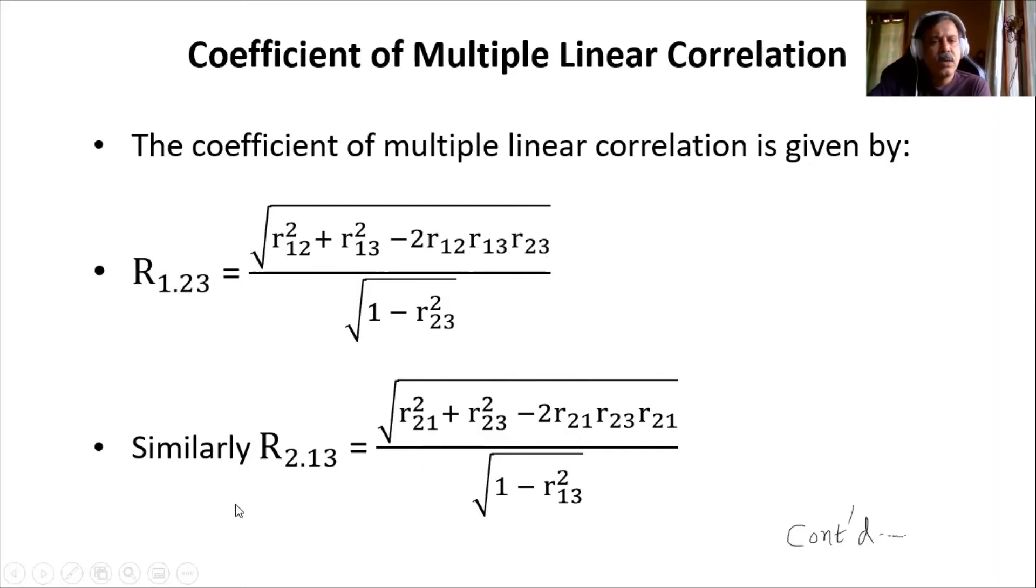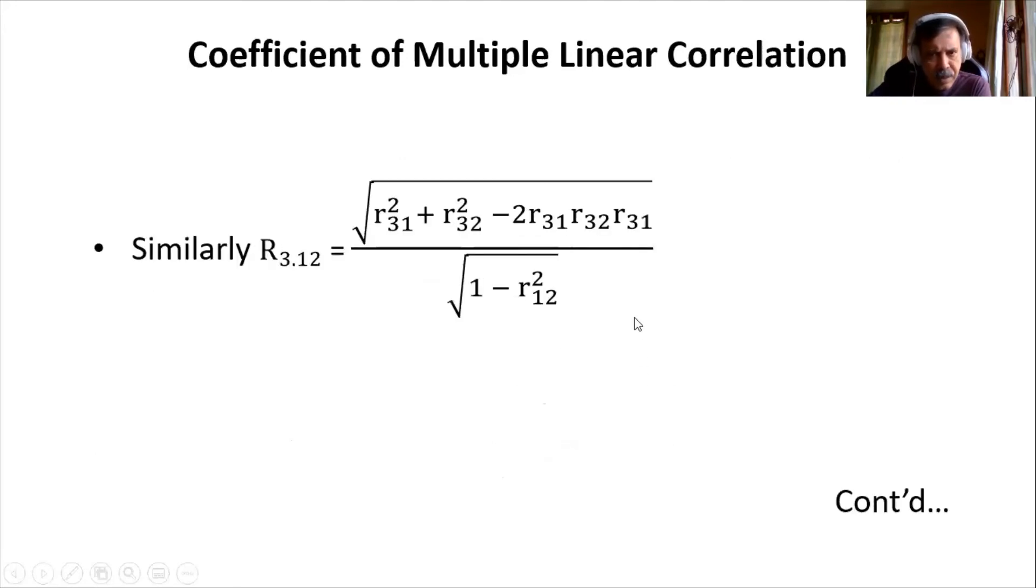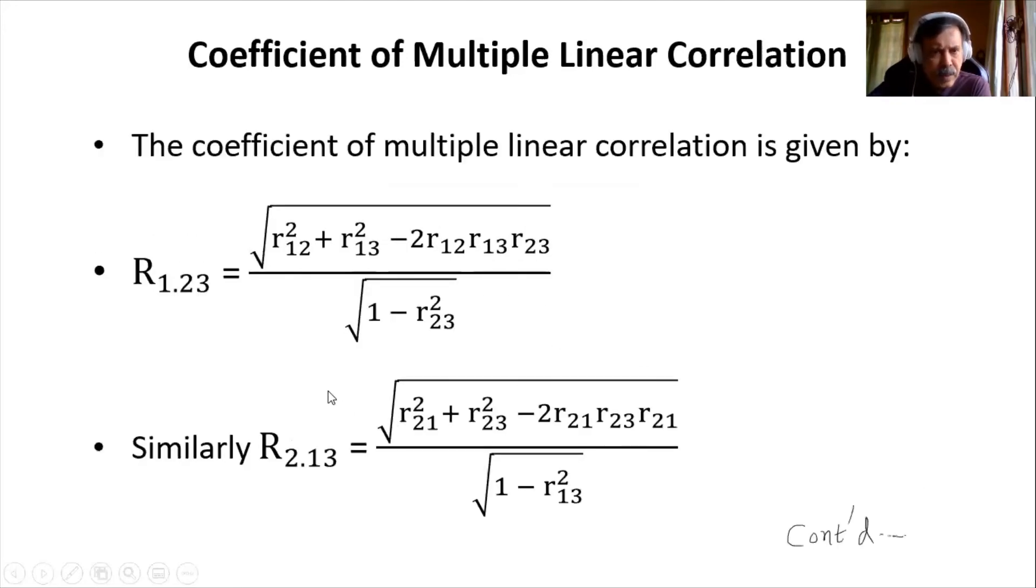Same way, 2.13 is r21 the square, then r23 the square minus 2 times 2, 1, 2, 3 and 1, 3. So it comes, all those combinations will come: 2, 1, 2, 3. I think I made a mistake here. Let me correct it.